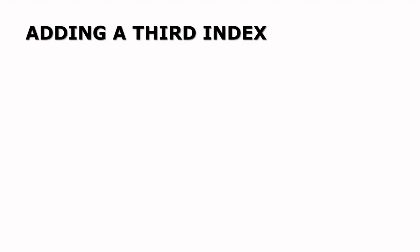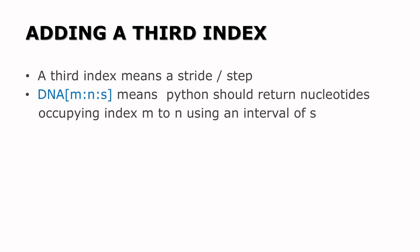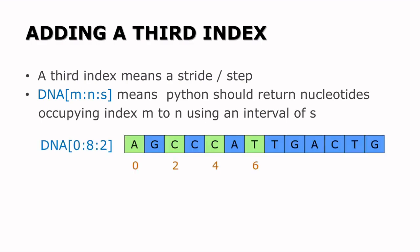Introduction of a third index. Third indexes can come in handy. Adding a third index means you are introducing a step or stride. And to do that we use this format: M, N, S — where M is the starting index, N is the ending index as usual, and S becomes the step or stride.